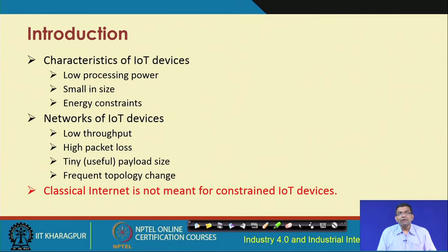What you need is solutions at the hardware, software, and algorithmic level which consume very low power. From a network point of view specifically, we need protocols and algorithms which consume extremely low energy. Each of these IoT devices in the IoT network is energy constrained, small in size, and has very limited processing power. Network protocols designed for IoT should be designed accordingly, keeping these constraints in mind.